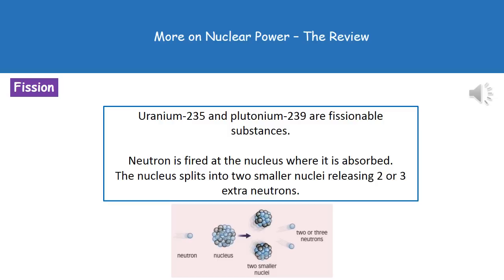To start this reaction, we fire a neutron at the nucleus, where it becomes absorbed. This makes the nucleus unstable. The nucleus then splits into two smaller nuclei, and as it does so it releases two or three extra neutrons.